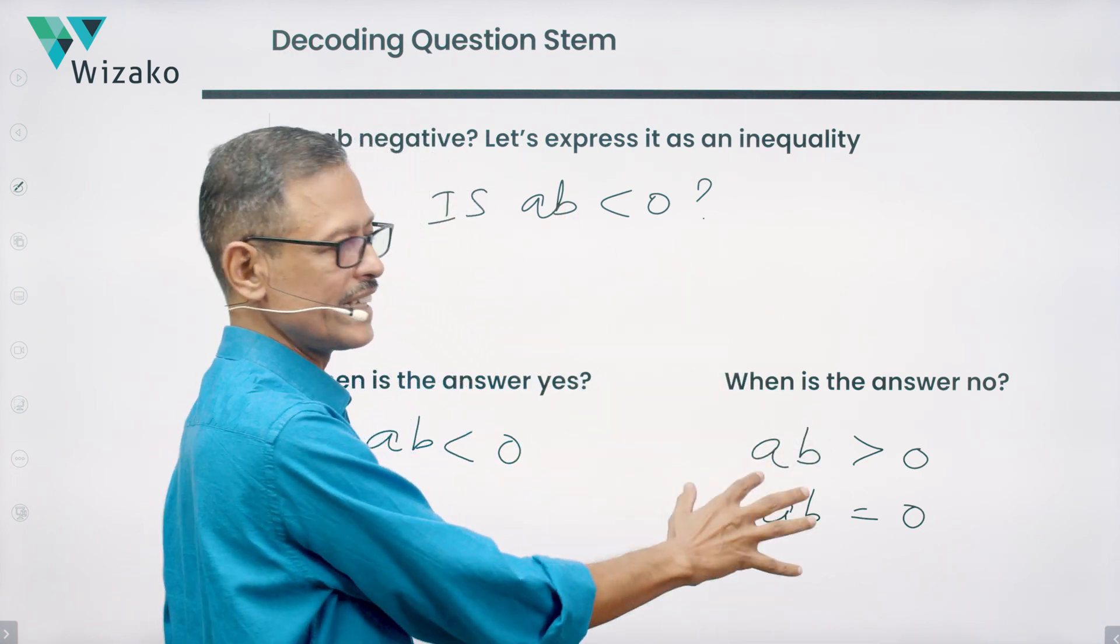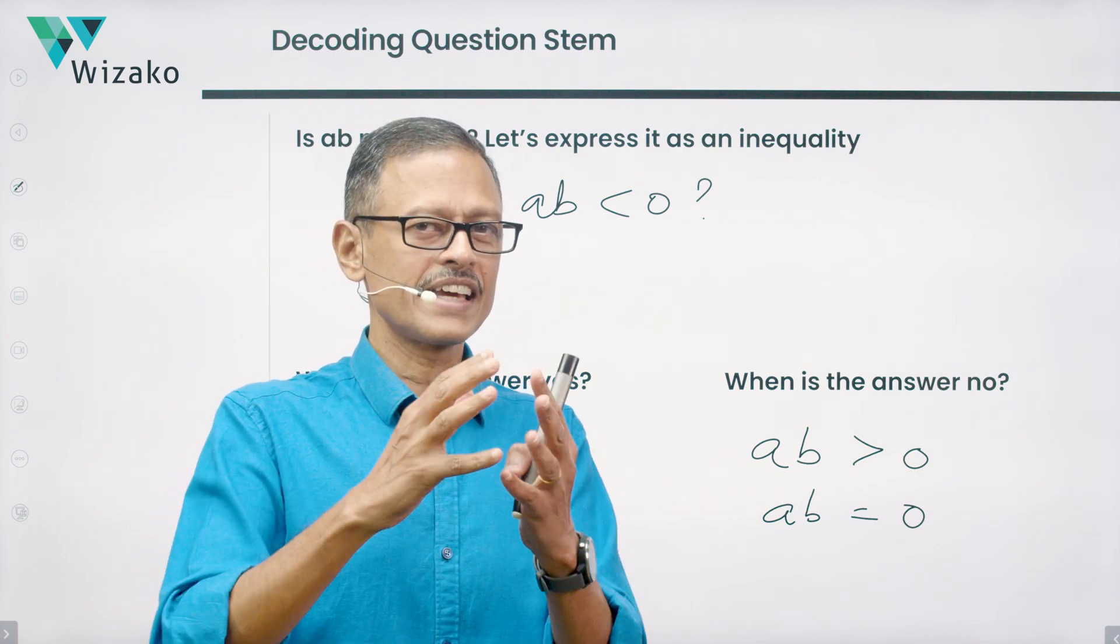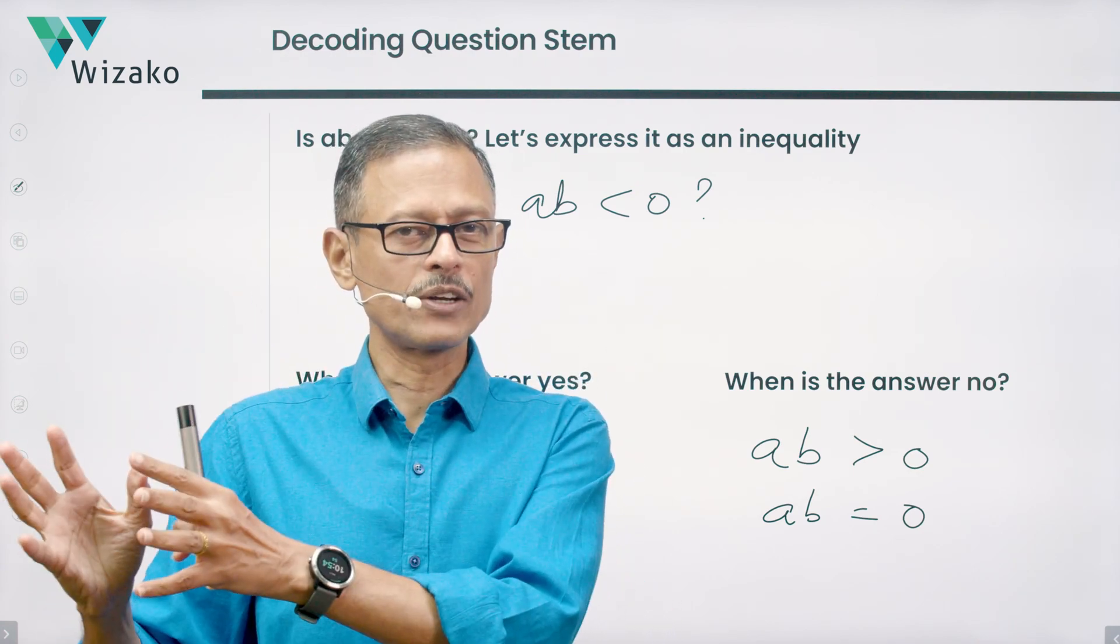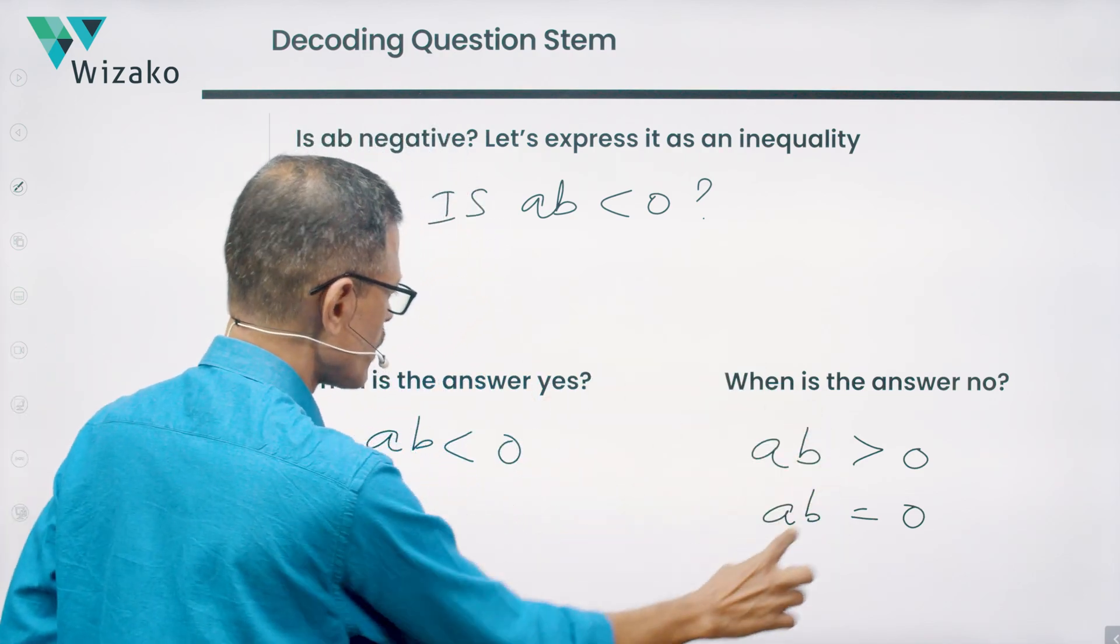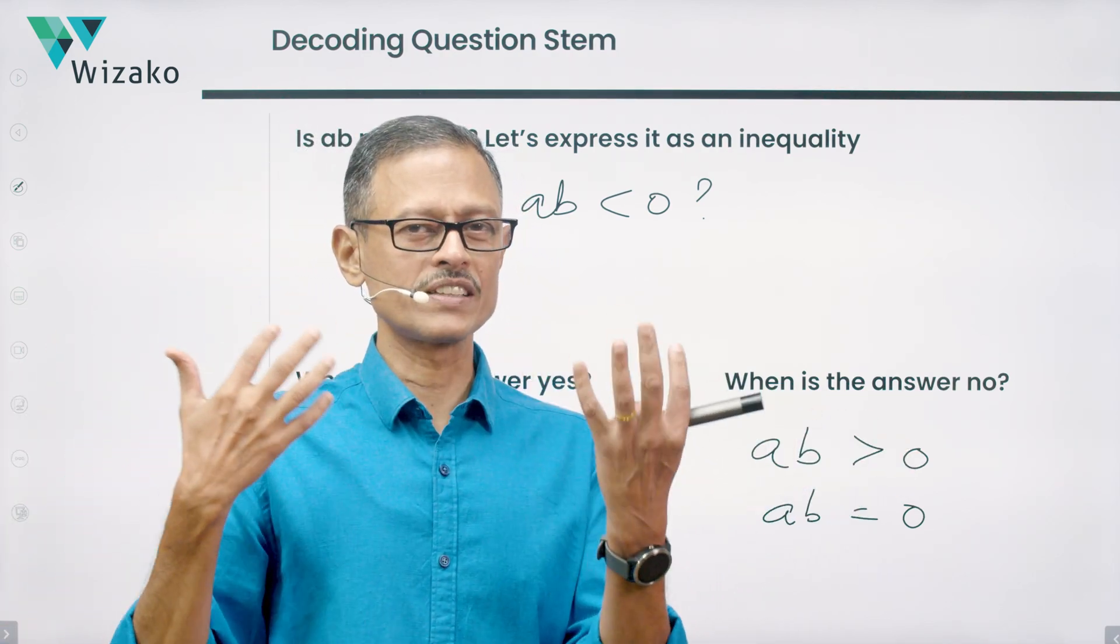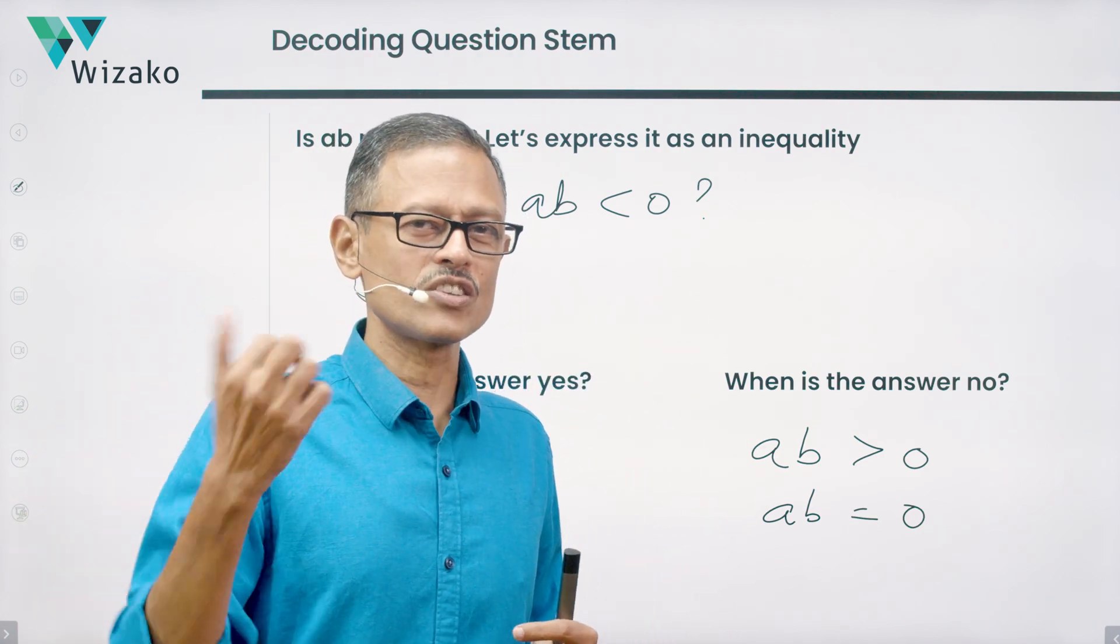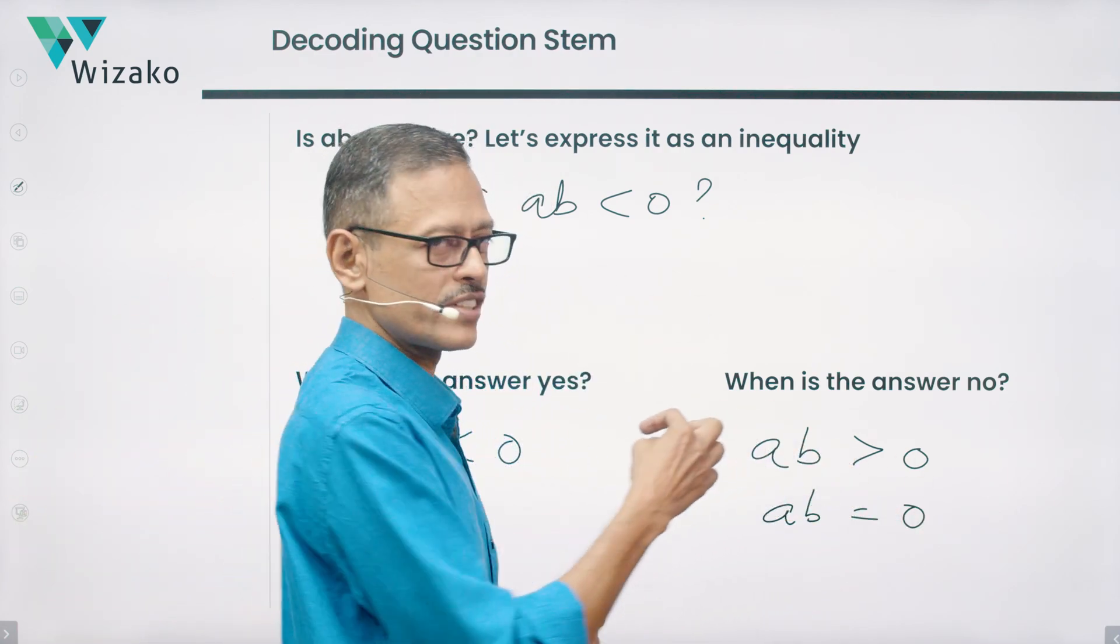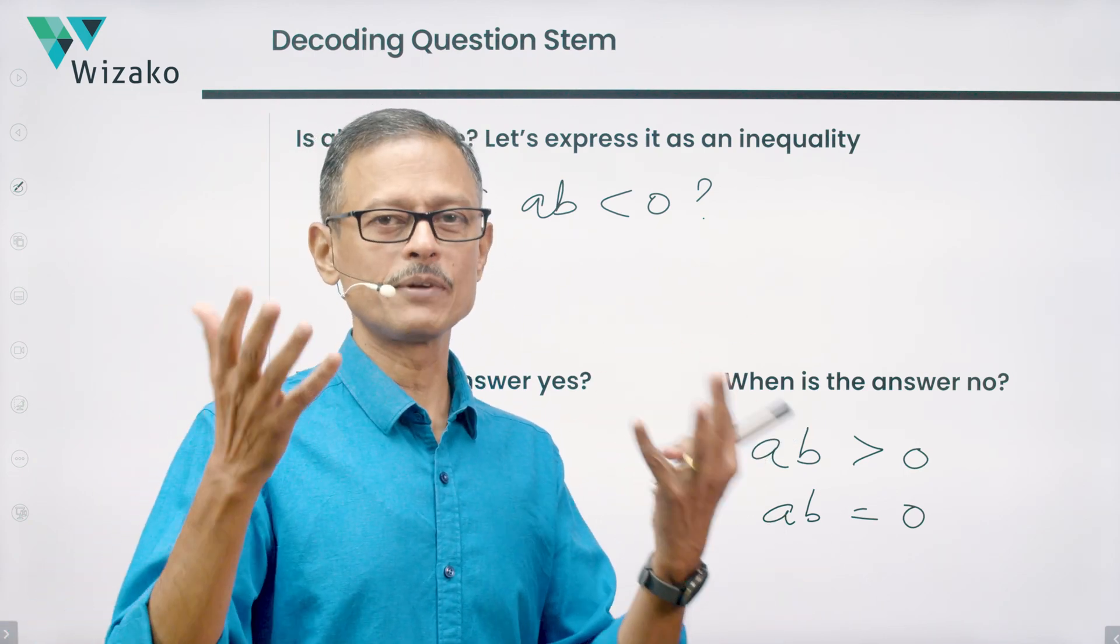Get this clarity in any DS question. The DS question is an is question. And quickly say, hey, when is it going to be a yes? When is it going to be a no? What are all the scenarios for yes? What are all the scenarios for no? Note that down in your scratch paper. So, in the examination, if you get AB equals 0, for instance, one of the statements leads us to that conclusion. You wouldn't be wondering, hey, now is it a yes or is it a no? Quickly come back to the scratch paper and see AB equals 0, then the answer is a no. We have a definite no, if it happens to be that.